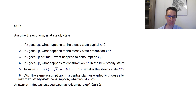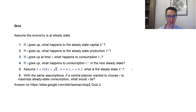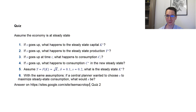And finally, a bit more difficult questions — these might be challenging, so do your best. Assume a functional form Y = F(K) = √K, delta is 0.1, and S is 0.2. What is the steady state amount of capital K*? Then question six: with the same assumptions, if a central planner wanted to choose S to maximize steady state consumption, what would S be? Pause the video now, answer the questions, then unpause to find out the answers.